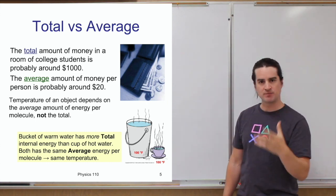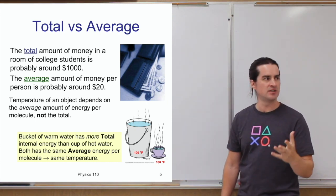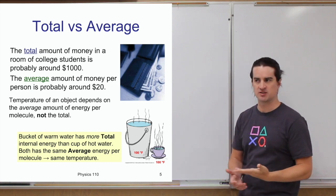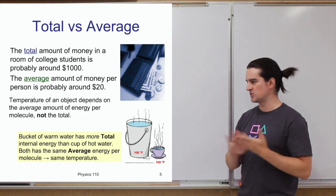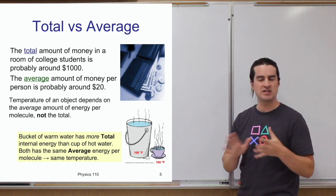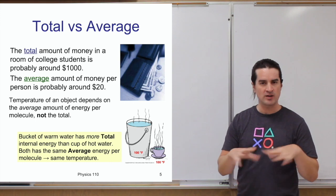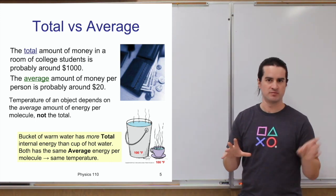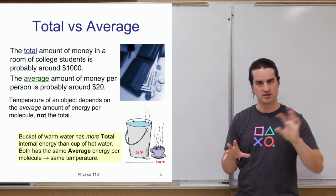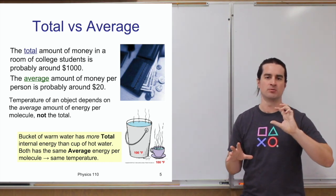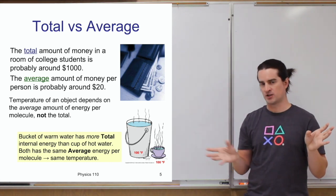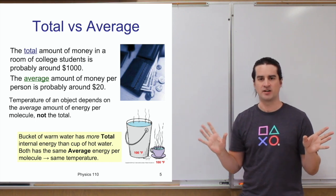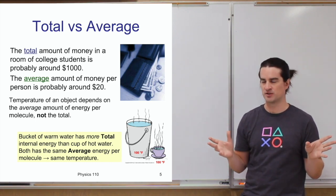When thinking about temperature and the motion of atoms that define the temperature of an object, it's important to keep distinct the idea of the total amount of energy in a material versus the average amount. The average internal energy in a material is essentially what we call the temperature. The total amount of internal energy can vary depending on how much material there is.